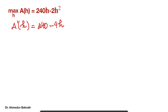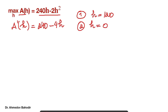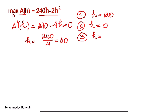Now we need to find the critical points of this function. There are essentially three points: the two boundary points and the point where the derivative equals zero. The boundaries are when h equals 0 (left boundary) and h equals 120 (right boundary). Setting the derivative equal to zero gives h equal to 240 divided by 4, which is equal to 60. So the third critical point we need to check is h equals 60.